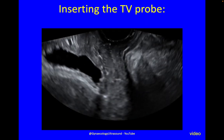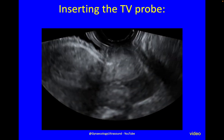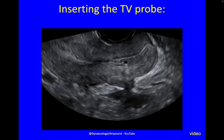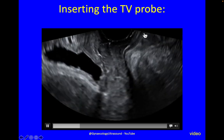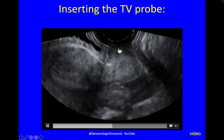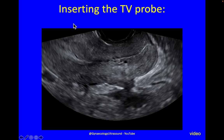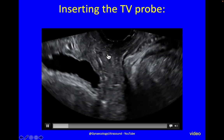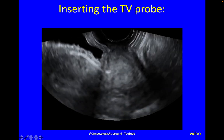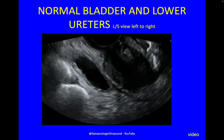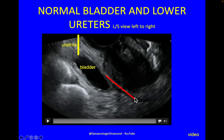Here is a video clip of inserting the probe. The probe is going into the vagina with the anterior wall here and the posterior wall here, bladder, going down the vagina — there's the cervix and the uterus with the endometrial cavity. Very, very slowly and gently. You can see the urethra, the bladder, and then the lower ureters where they insert into the bladder, and there's a bit of uterus at the front.